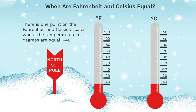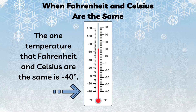At minus 40 degrees Celsius, the Fahrenheit scale also reads minus 40 degrees, signifying the temperature at which these two temperature scales coincide. This value serves as a reference point for temperature conversions and is a fascinating aspect of the Celsius and Fahrenheit systems.